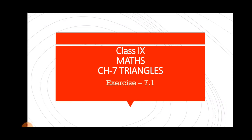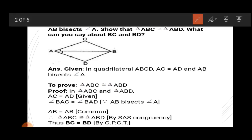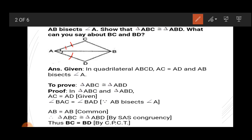Question number 1: In quadrilateral ABCD, AC is equal to AD and AB bisects angle A, which means angle CAB is equal to angle DAB. We need to show that triangle ABC is congruent to triangle ABD. Given: AC equals AD, and AB bisects angle A, which implies angle CAB equals angle BAD.